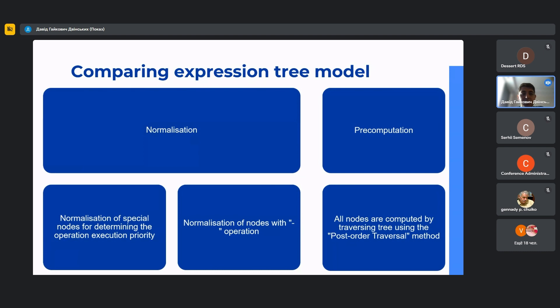During comparing expression tree models, there are several steps. The first two are normalization and pre-computation. Normalization includes removing special nodes that represent brackets in expressions by connecting parent with child node of these special nodes, normalizing nodes with minus operation which include minus node as child of divide node become parent of divide node, all minus nodes under multiply node are replaced by their child nodes. If the sum of minus nodes under multiply node is odd, the minus node becomes parent of multiply node. The pre-computation step computes all nodes by traversing tree using the post-order traversal method.